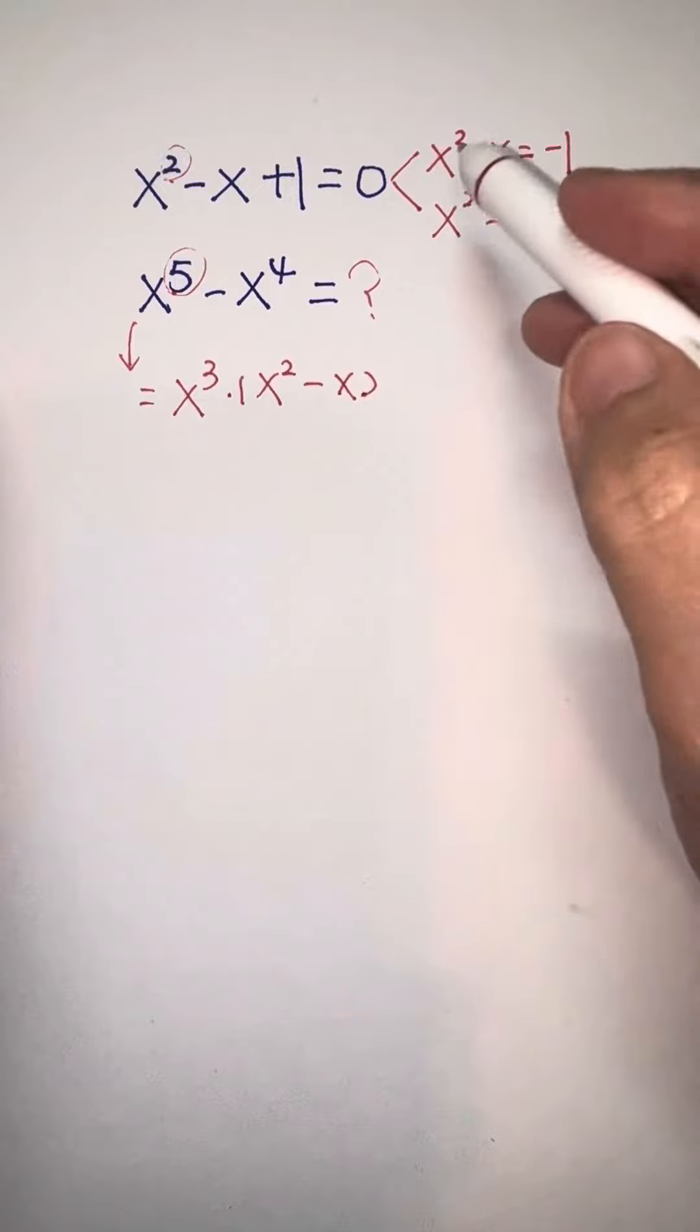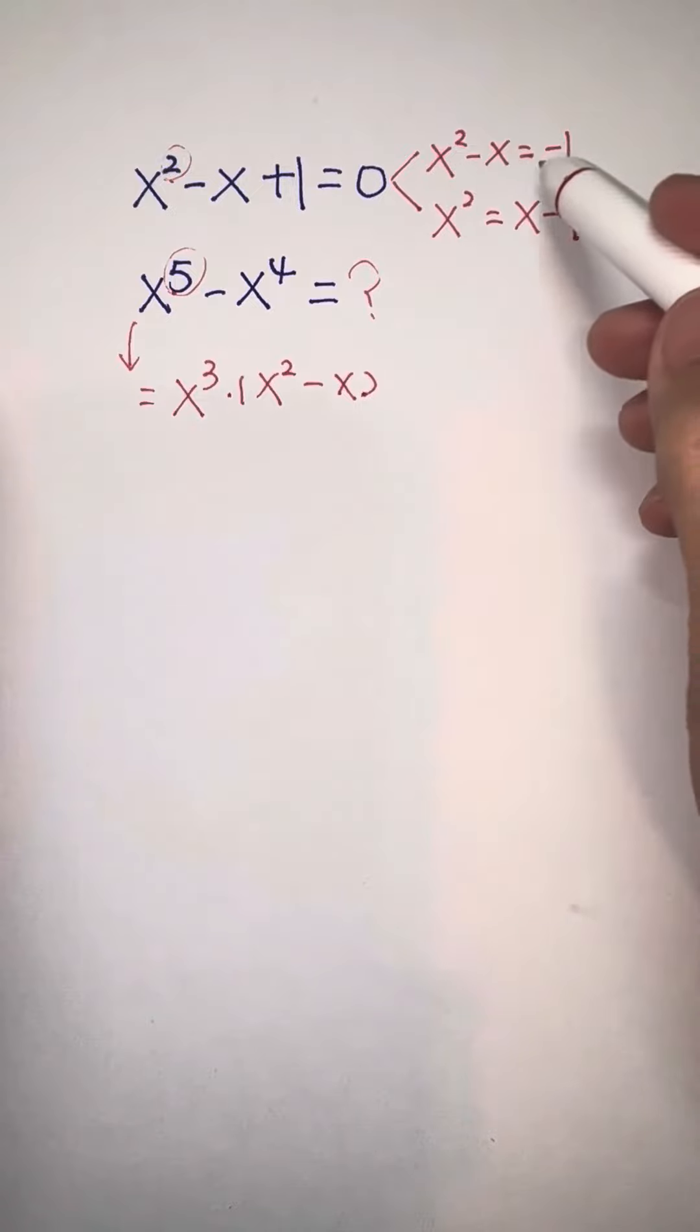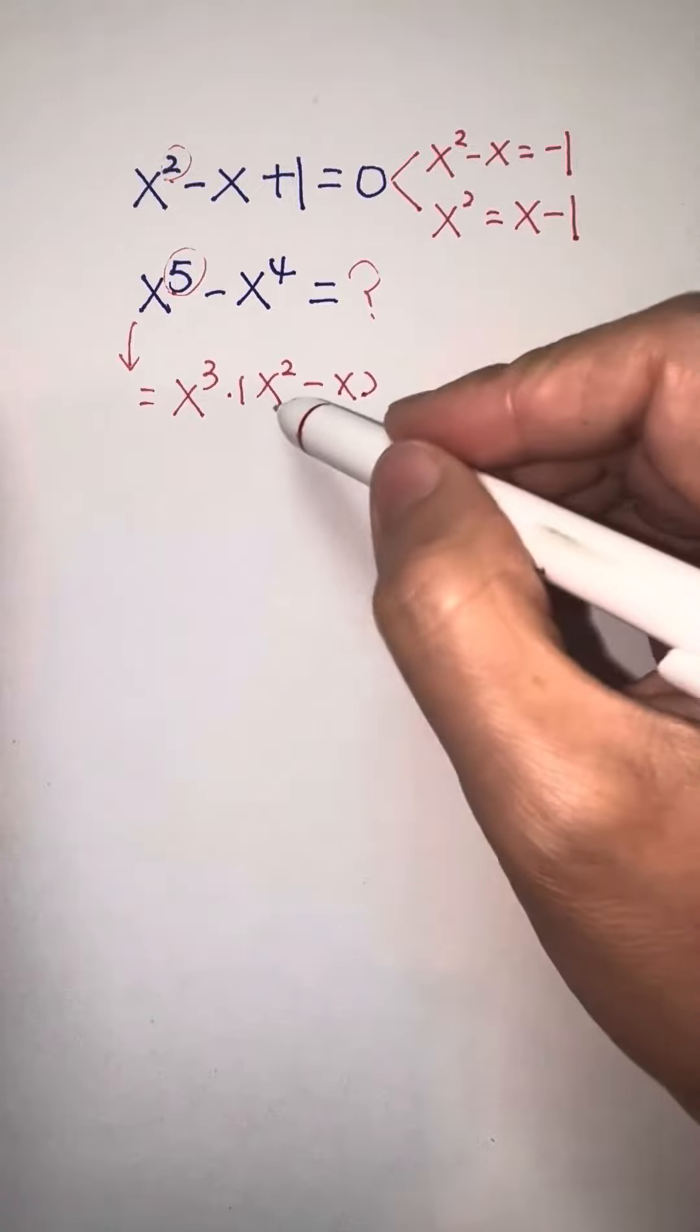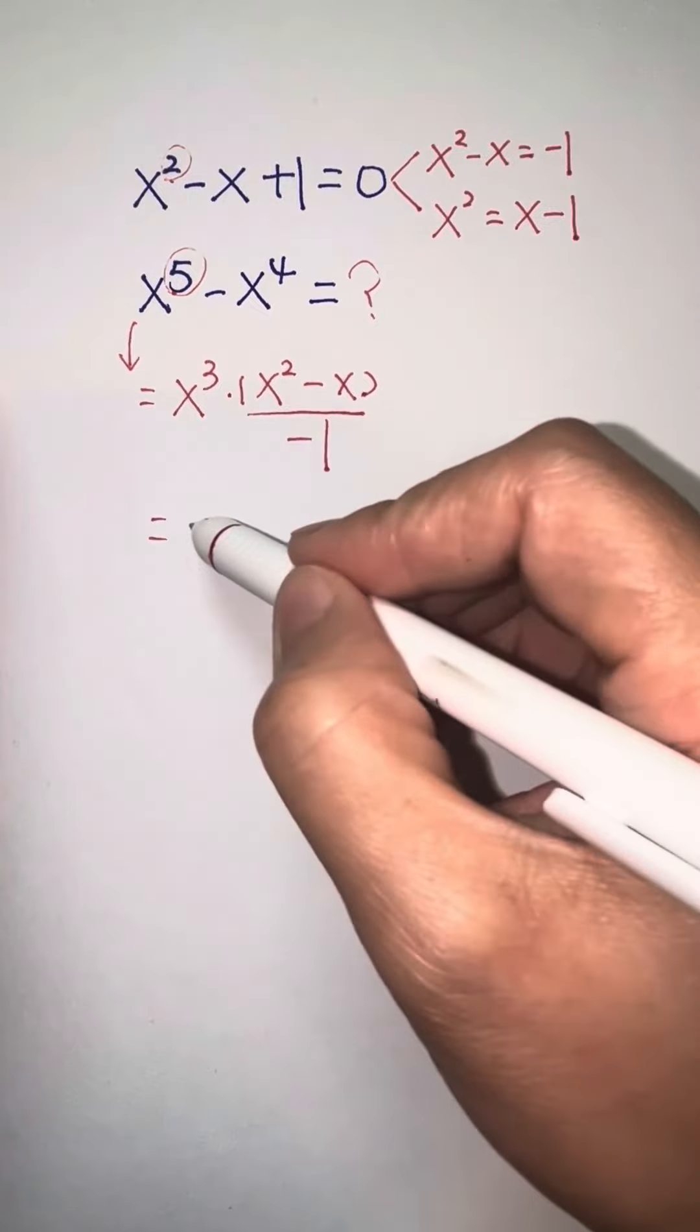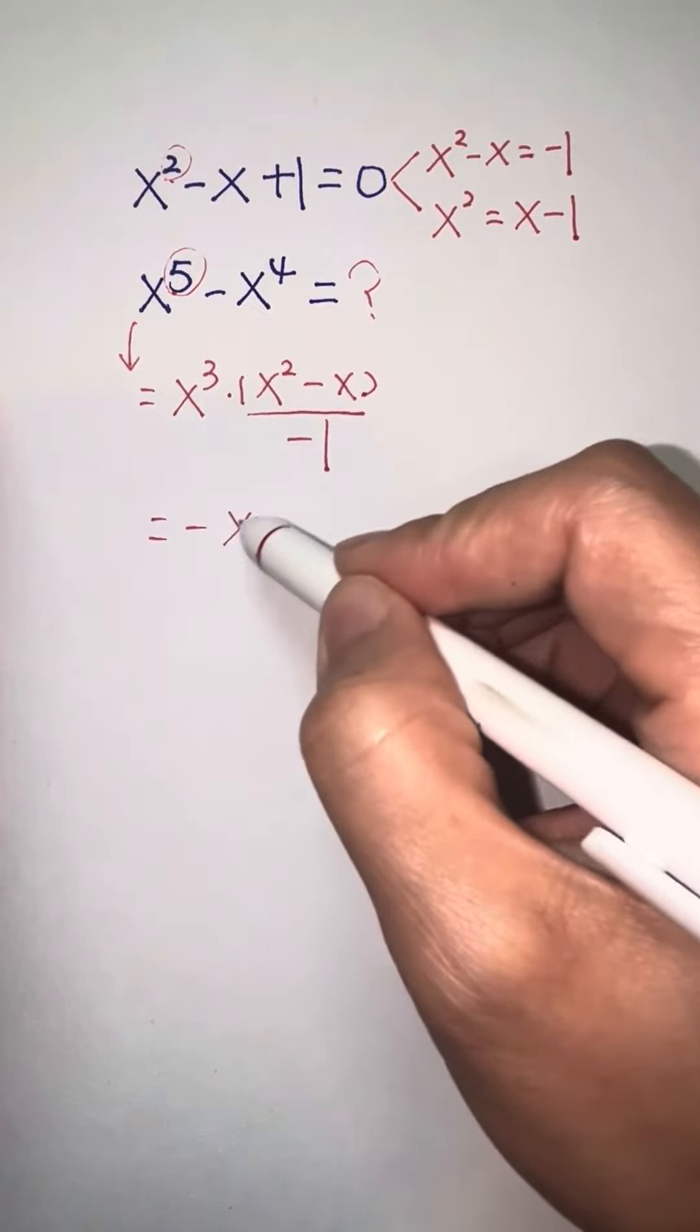In this case, we can see x squared minus x equals negative 1. So we're going to put here negative 1, which is negative x cubed.